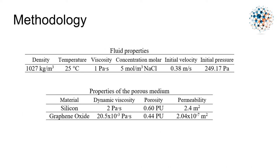Methodology. Here I present the initial conditions of the flow through the pipe. In the first table, we have the fluid properties, which is the density, the temperature, the viscosity, the concentration of salt, the initial velocity that was determined by the continuity equation, and the initial pressure. On the other hand, the table at the bottom has the properties of the porous medium. Here we have the materials—silicon and graphene oxide GO—and we have the parameters of dynamic viscosity, porosity, and permeability.